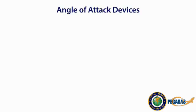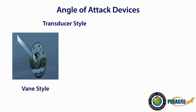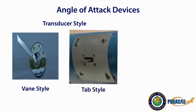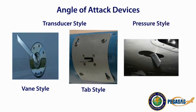There are two main styles of angle of attack devices. The first is a transducer style, which can be further divided into two subcategories: a vane style, which rotates to align with the relative wind, and a tab style, which measures the stagnation point of the airflow impacting the wing. The other AOA device is a pressure style, which measures the vector of the relative wind by comparing the pressure from two different ports. It is important to be aware, based on the manufacturer of your AOA device, how the angle of attack is being measured.